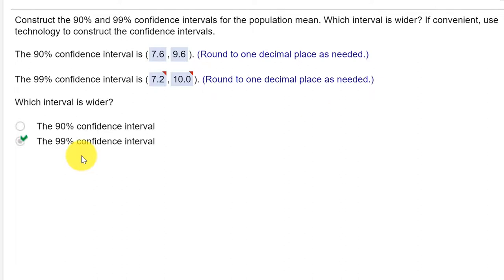And the final part is, which interval is wider? Well, it's kind of like a basketball hoop. The wider the hoop, the more confident you can be. So here, the 99% interval is wider, and you can see that. It goes from 7.2 to 10, which is wider than 7.6 to 9.6.